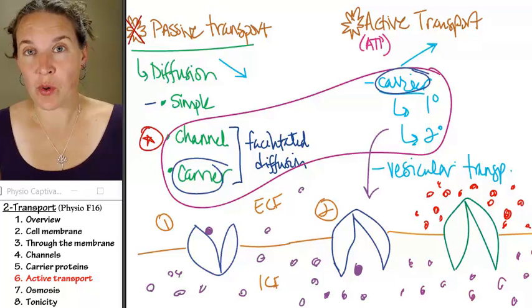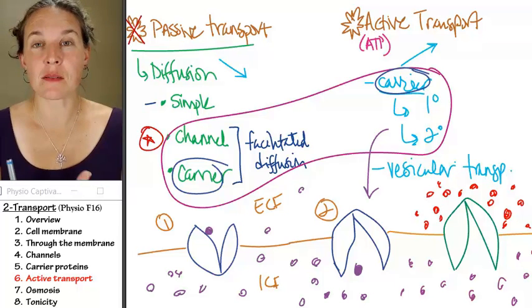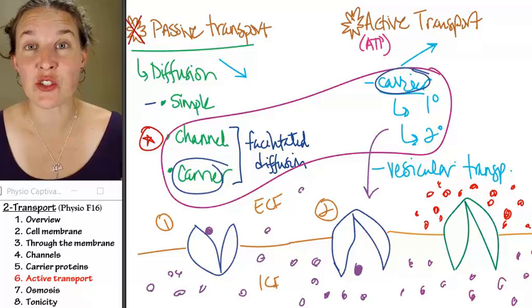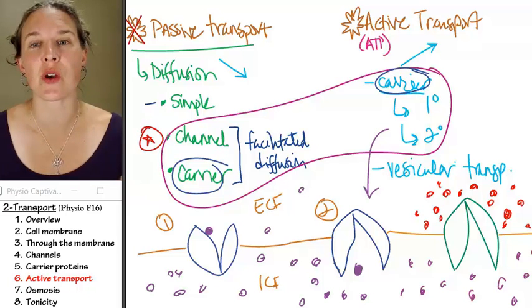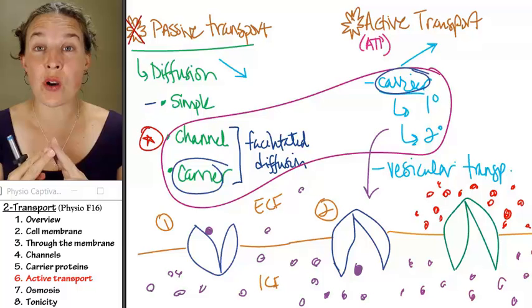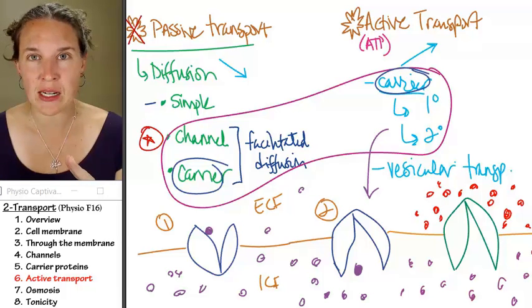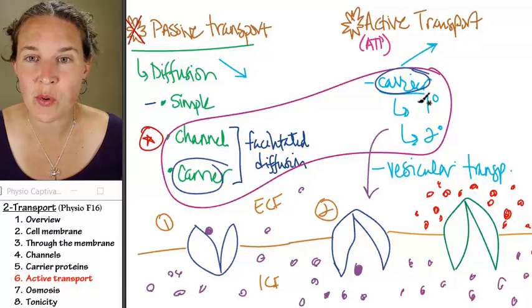So active transport pumps molecules against the concentration gradient and requires an energy source in order to do so. We have two forms of carrier-mediated active transport: primary active transport and secondary active transport.